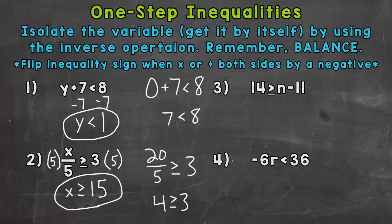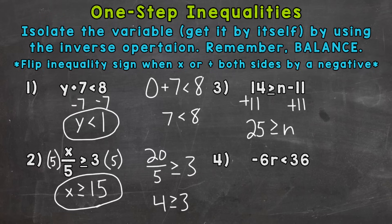On to number three, where we have 14 is greater than or equal to n minus 11. We need to isolate n — 11 is being subtracted from n, so the opposite would be adding 11. Let's add 11 to both sides in order to isolate n and keep everything balanced. So n is isolated and 14 plus 11 is 25, giving us 25 is greater than or equal to n. So n has to be less than or equal to 25. Let's test something out — let's do 20.